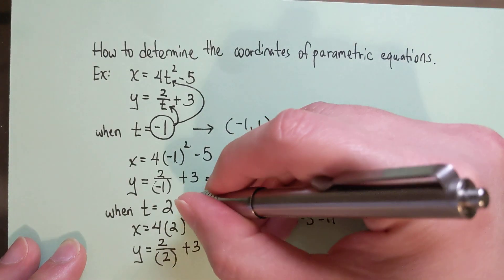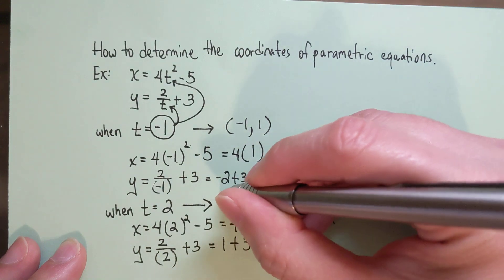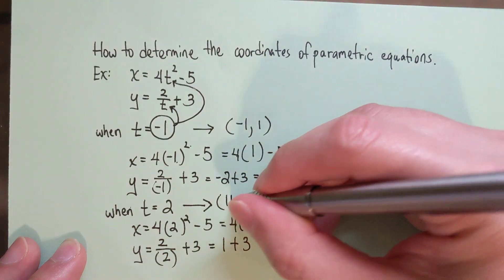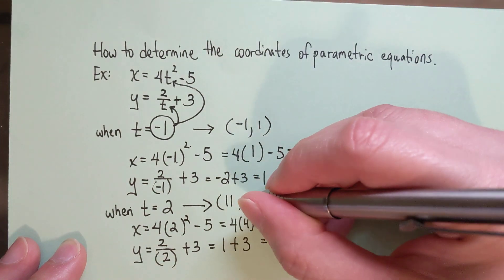Therefore, the coordinates when t is 2 is an x coordinate of 11 and a y coordinate of 4.